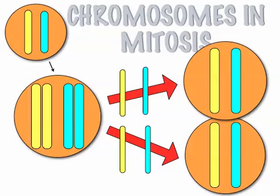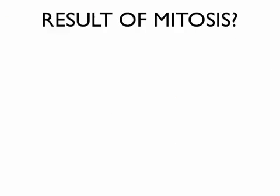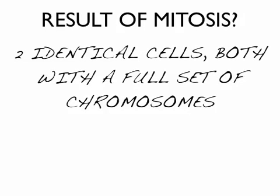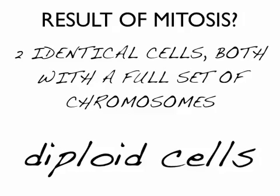Mitosis makes identical cells. For example, if the parent has 46 chromosomes, the offspring will have 46 chromosomes. So, what is the result of mitosis? Two identical cells, both with a full set of chromosomes. The vocab word for a cell with a full set of chromosomes is a diploid cell. In humans, our diploid cells have 46 chromosomes — that's our full set. But if you're like a fruit fly, you might have eight.